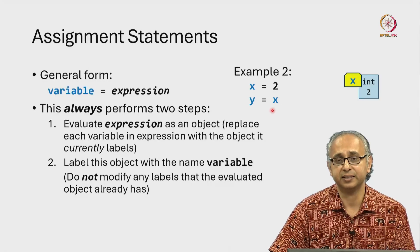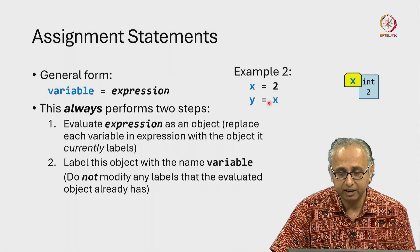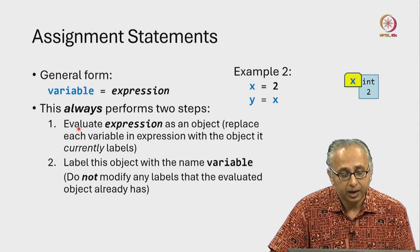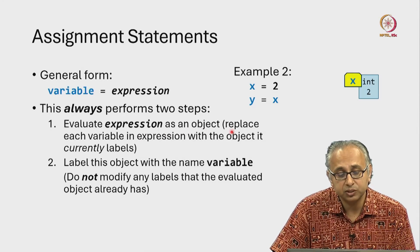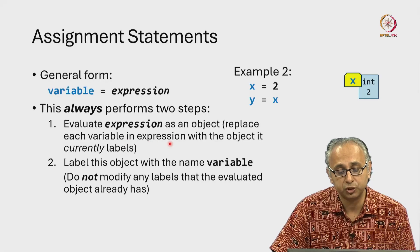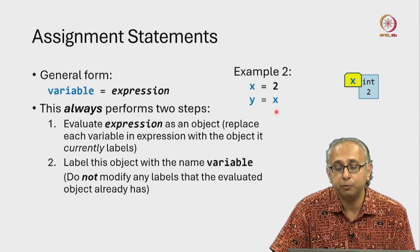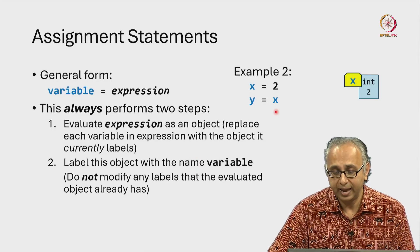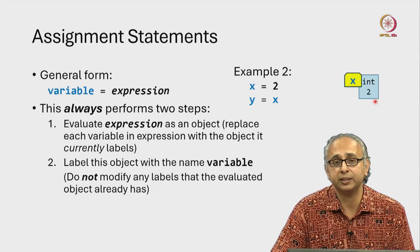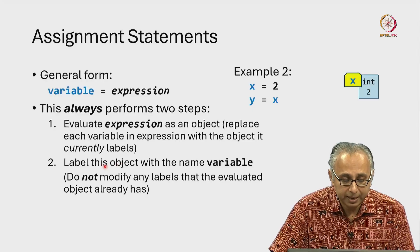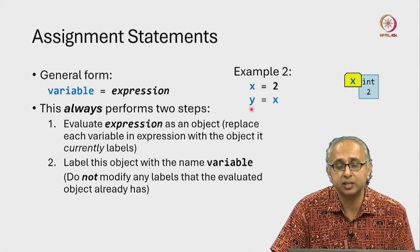Now what about the second assignment statement? Again we evaluate the right hand side. The detail says: evaluate the expression as an object, but replace each variable in the expression with the object it currently labels. So how do we evaluate the right hand side x? Well, x labels some object, so when we evaluate x we just get that object. Now we label this evaluated object with the name of the variable on the left hand side, which is y.